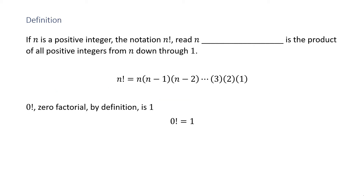Let's look at a definition. If n is a positive integer, the notation n! — read 'n factorial' — is the product of all positive integers from n down to one. We write this as n factorial equals n times (n minus 1) times (n minus 2) times dot dot dot times 3 times 2 times 1. Zero factorial, by definition, is one.